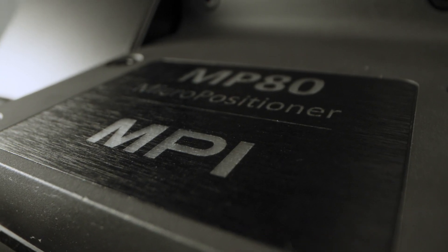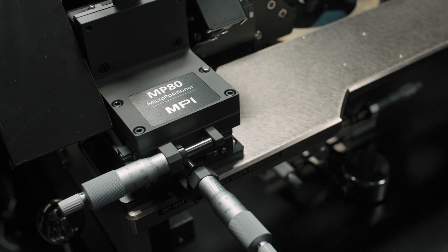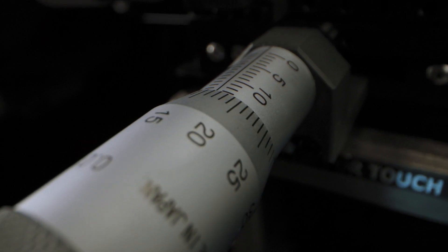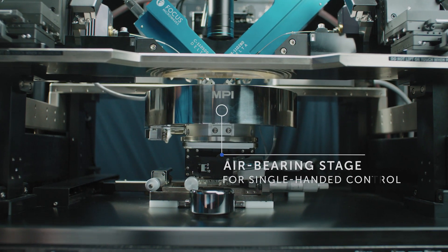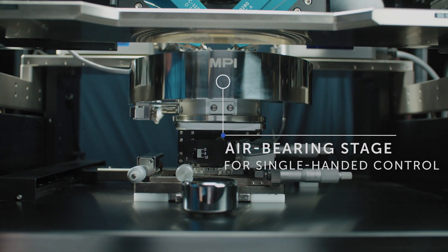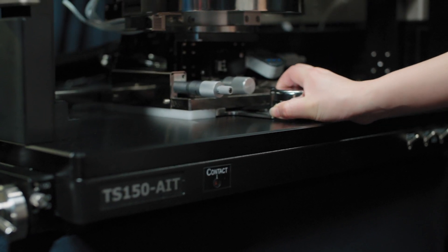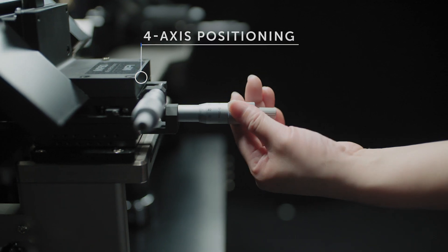MPI's TS series of manual probe stations are open, easy to use, and cost-effective yet highly accurate. These systems are designed for precise analysis of wafers up to 300 millimeters. The MPI unique air bearing stage design with single-handed puck control provides unsurpassed convenience of operation for fast XY navigation and quick wafer loading without compromising accuracy.